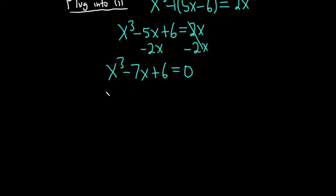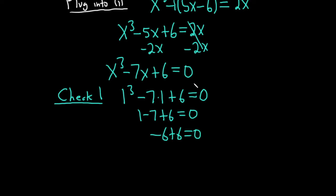Let's check 1. I say that because a lot of times in these problems, they're kind of rigged, like usually 1 works. Let's see. 1 cubed minus 7 times 1 plus 6 equals 0. That's 1 minus 7 plus 6 equals 0, so negative 6 plus 6 equals 0. So 1 is a solution.